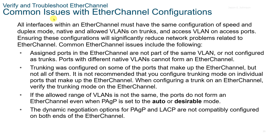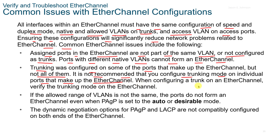Some common issues with EtherChannel configuration: All interfaces within an EtherChannel must have the same configuration of speed and duplex mode, native and allowed VLANs on trunks, and access VLAN on access ports. Common issues include assigning ports in the EtherChannel that are not part of the same VLAN or are not configured as trunks. Ports with different native VLANs cannot form an EtherChannel. Trunking was configured on some of the ports that make up the EtherChannel but not all of them — it's not recommended to configure trunking mode on individual ports. If the allowed range of VLANs is not the same, the ports do not form an EtherChannel even when PAGP is set to auto or desirable. The dynamic negotiation options for PAGP and LACP must be compatibility configured on both ends.